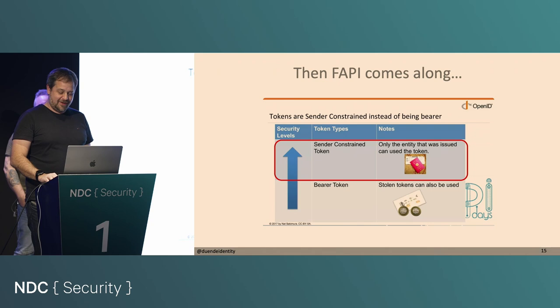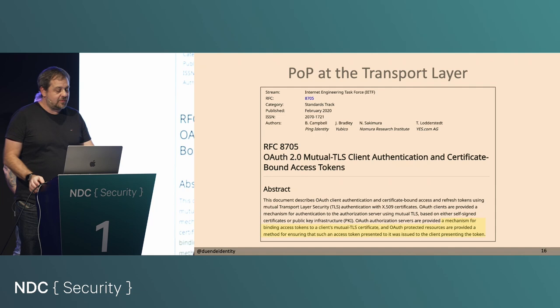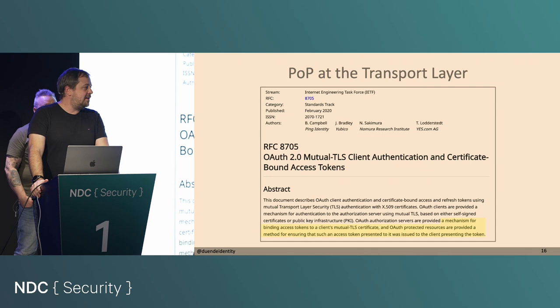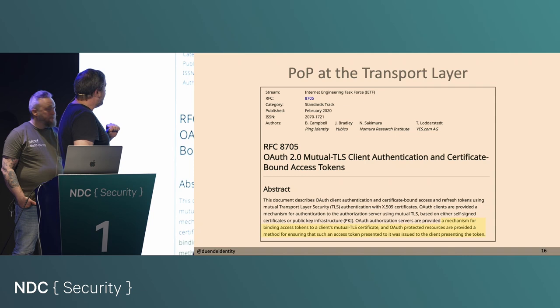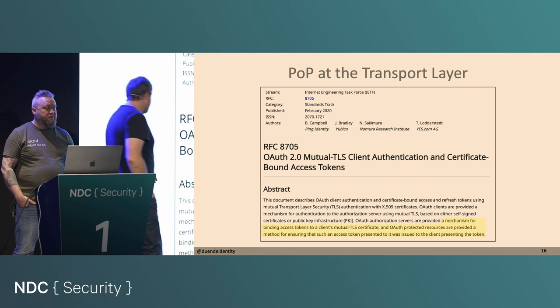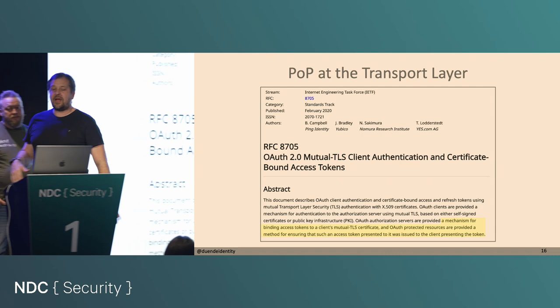That's where this spec came along — basically reusing mutual TLS. The assumption was that in many banks, you already have PKI and TLS and smart cards and client certificates — all of that already exists. Some smart people, the authors, figured out that MTLS can be used to bind access tokens to a client's mutual TLS certificate across all protected resources.